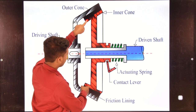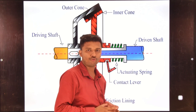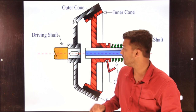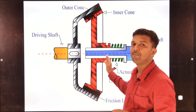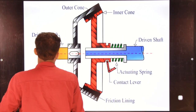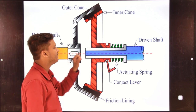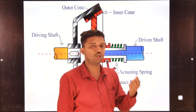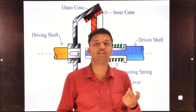This clutch component is sometimes regarded as the male part of the cone clutch system. The inner cone is also otherwise known as the male part of the cone clutch. The driving shaft gets torque from the engine, and the driven shaft transmits the torque from the driving shaft to the gearbox, then to the propeller shaft, then to the differential, and to the rear axle.